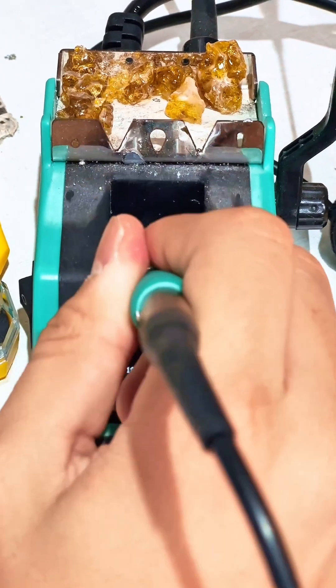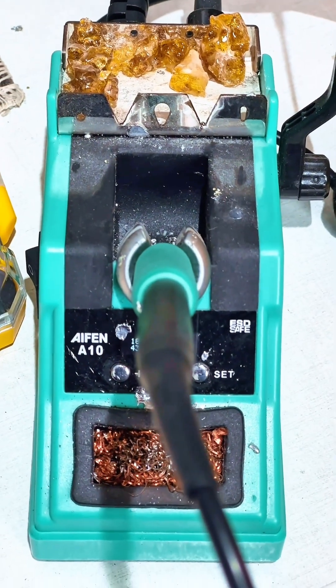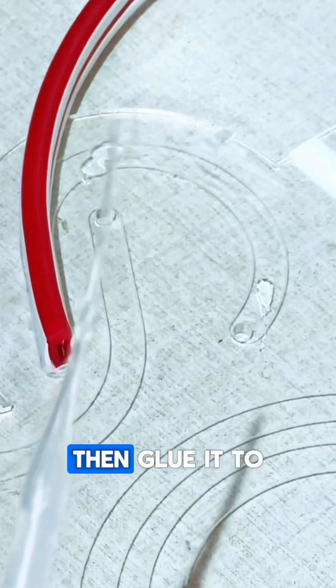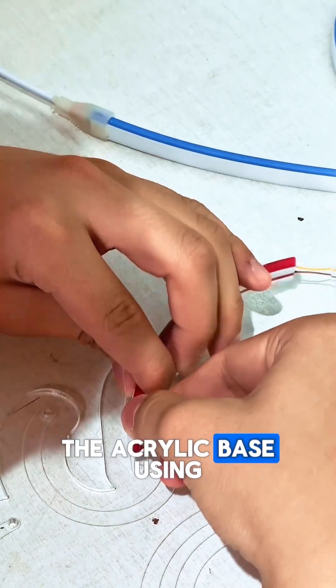Then we solder the wires. We test the segment to make sure it works. Then glue it to the acrylic base using super glue.